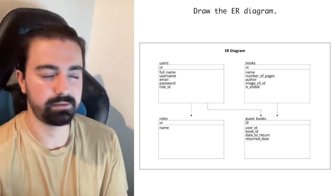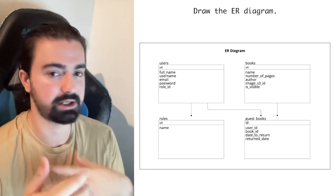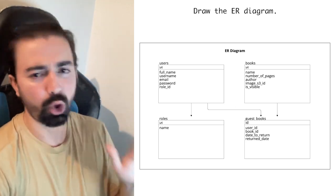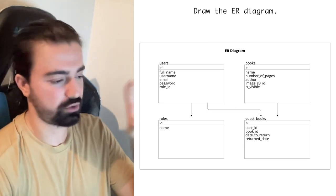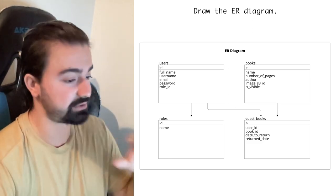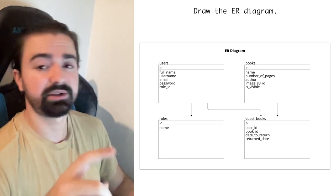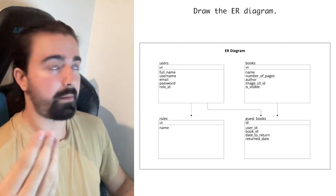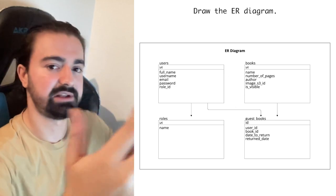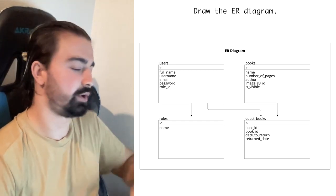The images come from S3, and if a book is not visible just set it to false. Connecting users and books through a table — GuestBooks — with user ID, book ID, date to return, and returned date. Multiple users can be linked with a single role. This is one of the simplest diagrams you'll see — once you understand it, you can develop it further. For example, you could take the author from the books table and create a separate Authors table, then link them together.